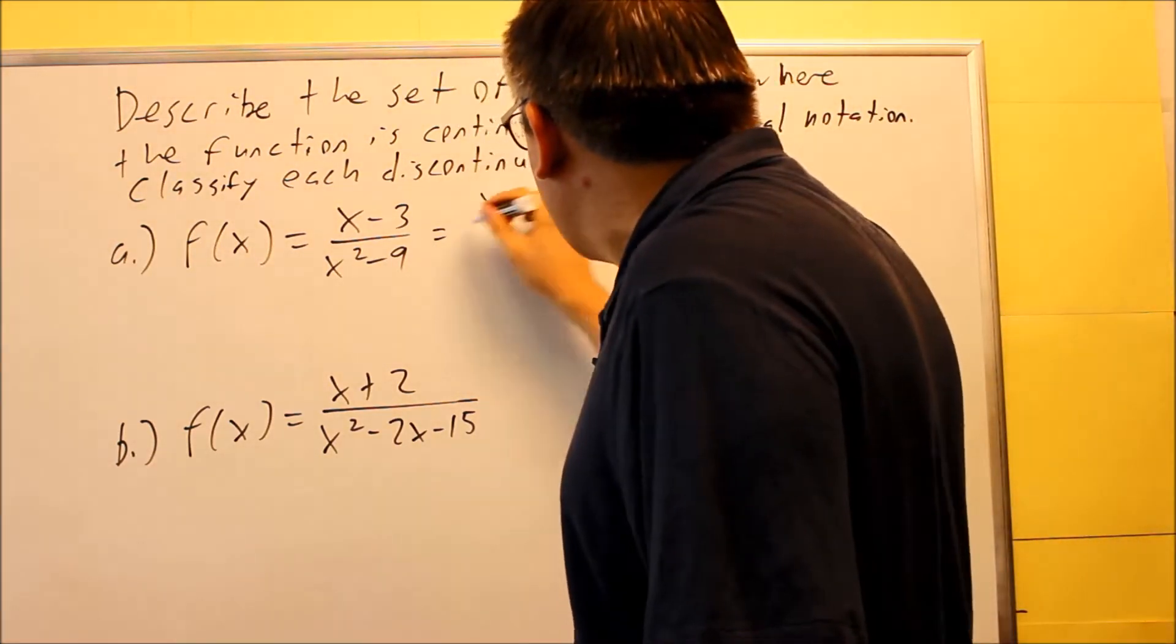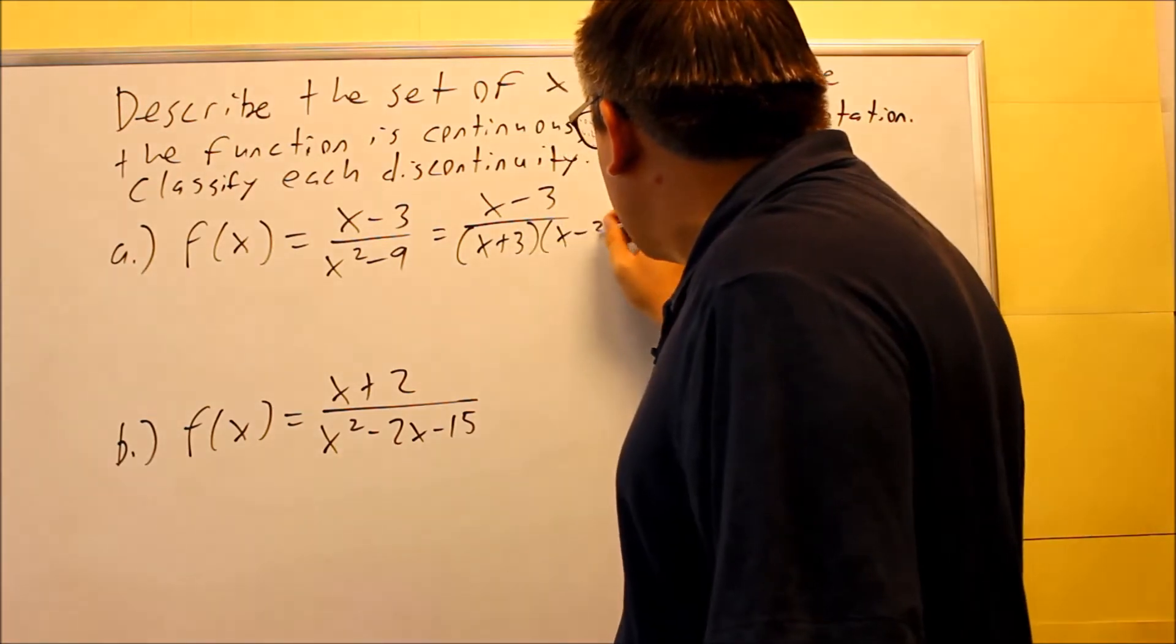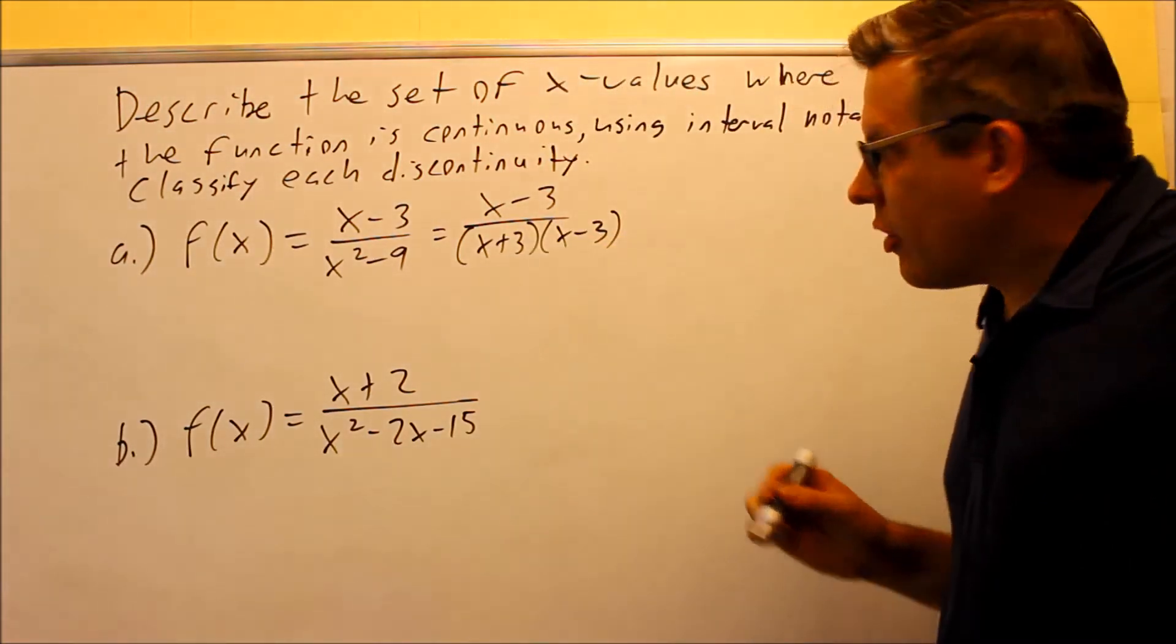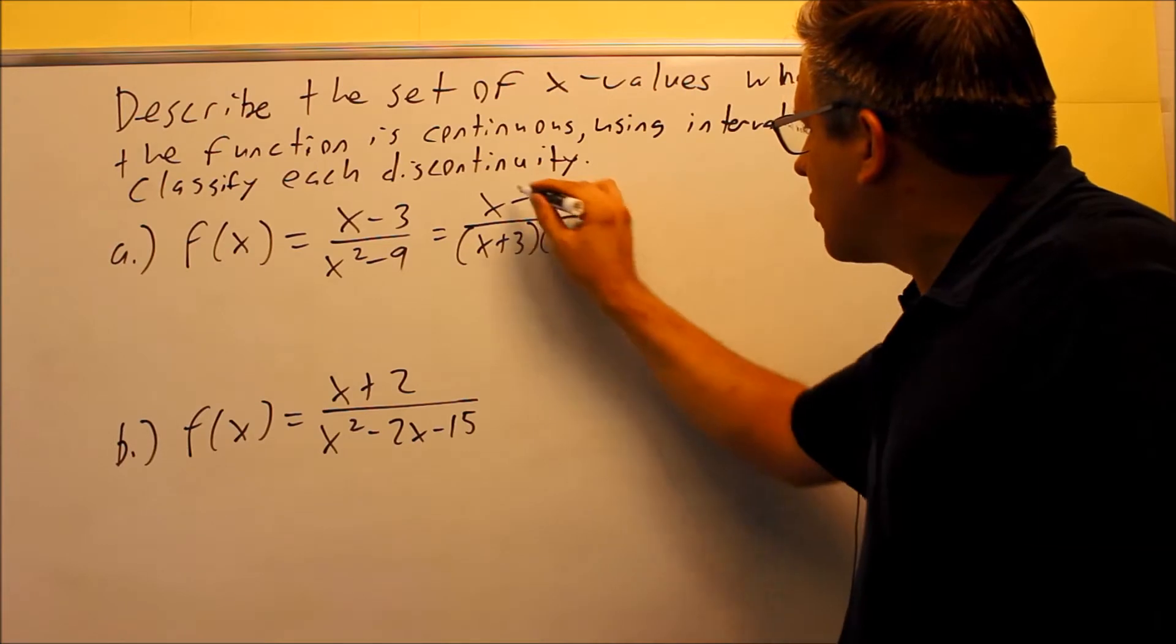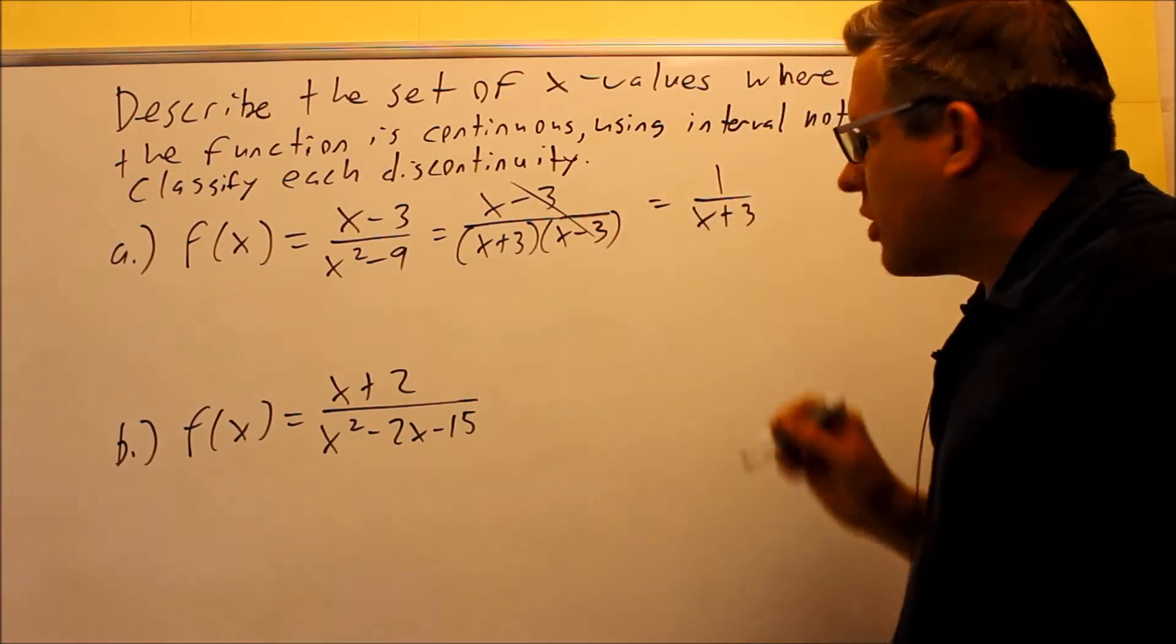I want to factor it. It's x minus 3. The bottom I have x plus 3, x minus 3. And what I notice about that is that I have the x minus 3's I can cancel and that's going to leave me with 1 over x plus 3.